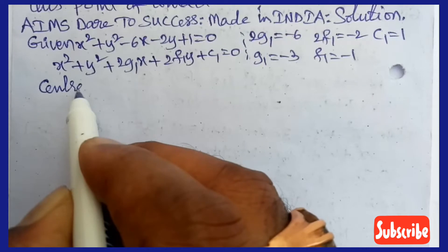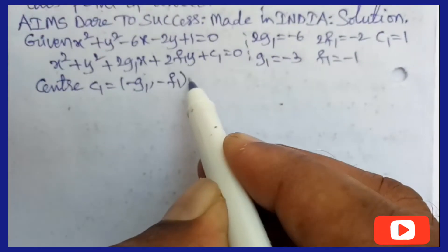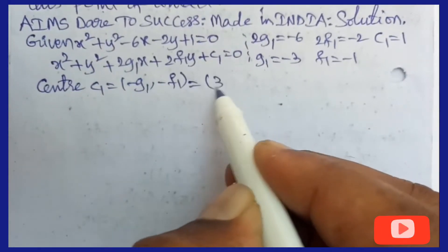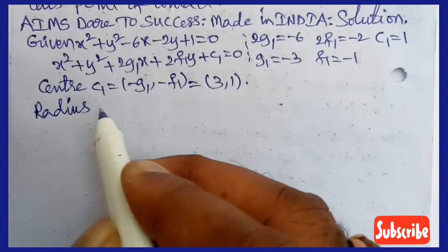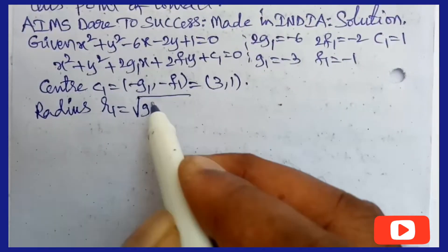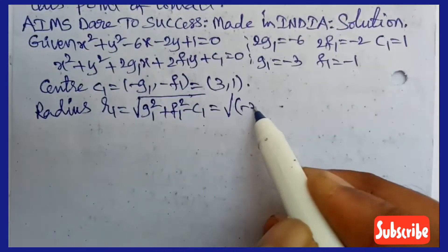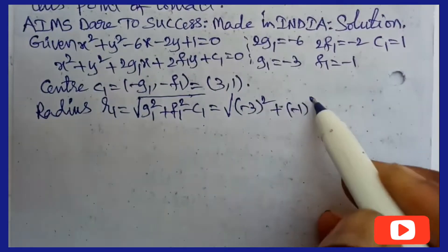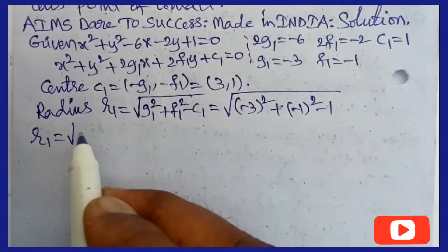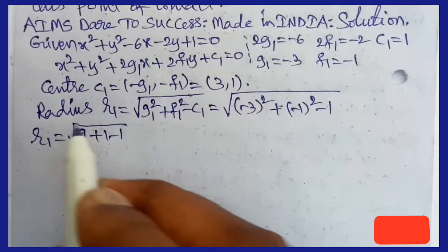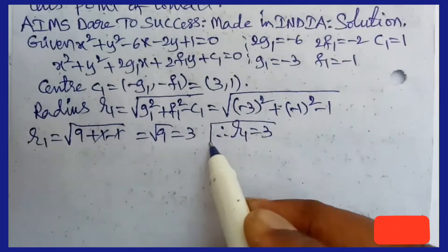Now we can find the center. Center formula is (-g, -f), so center₁ = (-g₁, -f₁) = (3, 1). Next, radius r₁ = √(g₁² + f₁² - c₁) = √((-3)² + (-1)² - 1) = √(9 + 1 - 1) = √9 = 3. So r₁ = 3. From the first circle, center and radius are completed successfully.